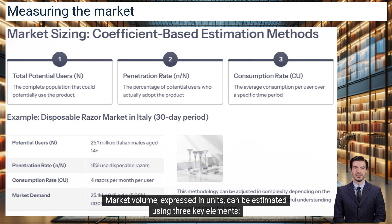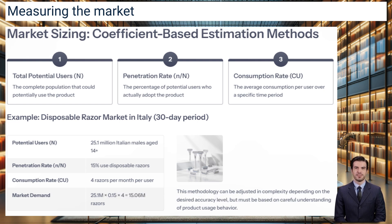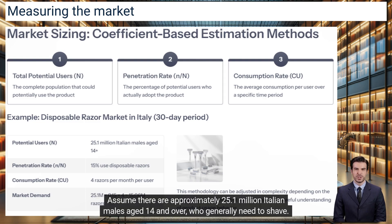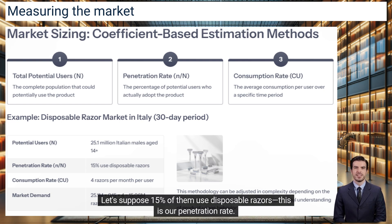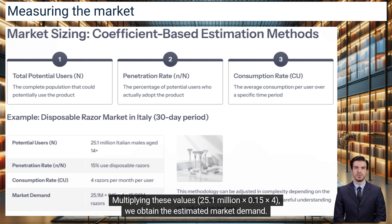Market volume, expressed in units, can be estimated using three key elements: N, the total number of potential users; N_in/N, the ratio indicating product adoption or penetration; and CU, the average consumption rate per user. Let us apply this model to a concrete scenario: estimating the demand for disposable razors in Italy over a 30-day period. Assume there are approximately 25.1 million Italian males aged 14 and over. Suppose 15% of them use disposable razors — this is our penetration rate. Finally, assume each user consumes four razors per month. Multiplying these values — 25.1 million × 0.15 × 4 — we obtain the estimated market demand.